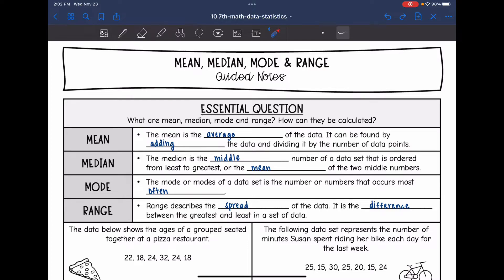The mode or modes of the data set is the number or numbers that occur the most often. And then the range describes the spread of the data. It is the difference, so we'll subtract the greatest and the least in a set of data.